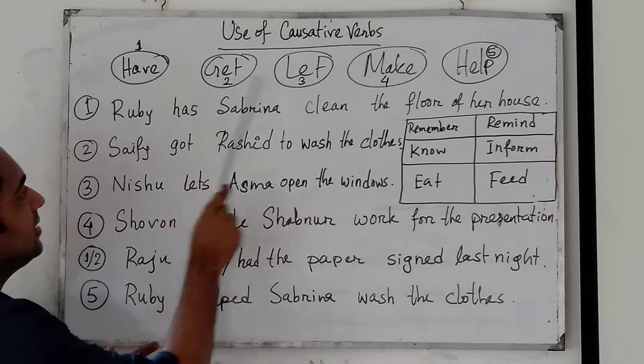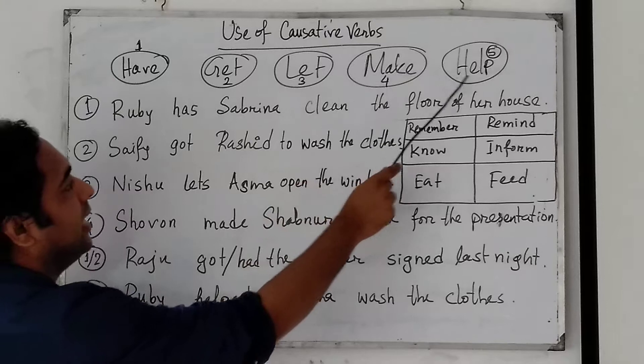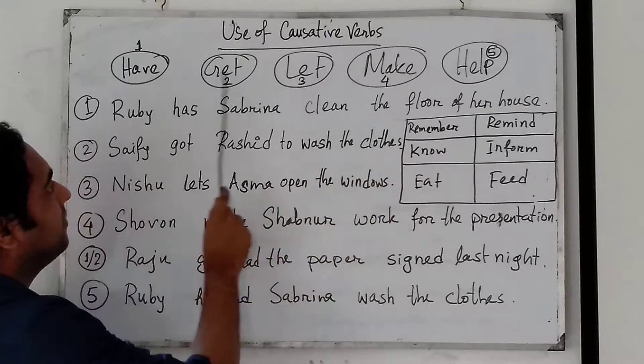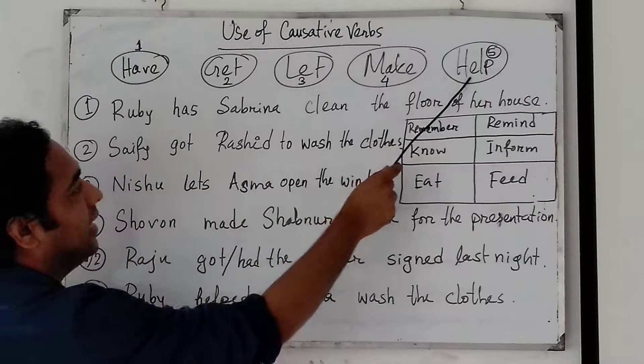The five causative verbs are: have, get, let, make, and help.